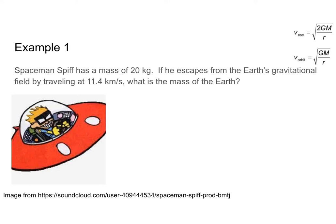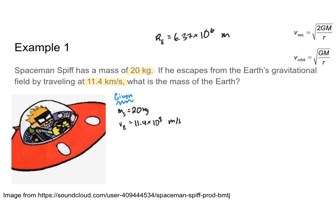Let's go ahead and do an example. Spaceman Spiff has a mass of 20 kilograms. If he escapes from the Earth's gravitational field by traveling at 11.4 kilometers per second, what is the mass of the Earth? One piece of information you would also need is that the radius of the Earth is 6.37 times 10 to the sixth meters. Listing our givens: mass of the satellite is 20 kg, escape velocity is 11.4 times 10³ meters per second, and radius of the Earth is 6.37 times 10⁶ meters.